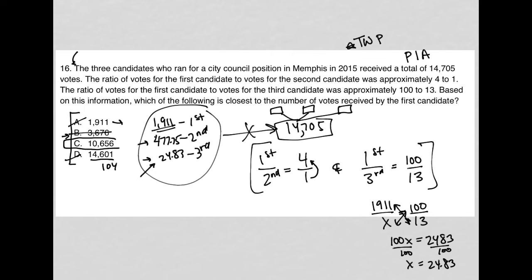So I'm pretty confident that choice C must be the correct answer. So that's what I would choose. If we want to prove it, we would say, the first candidate received 10,656.